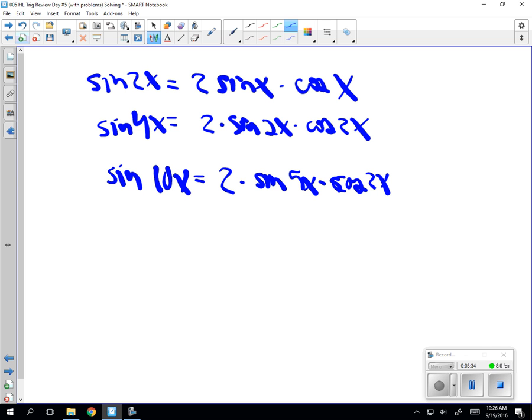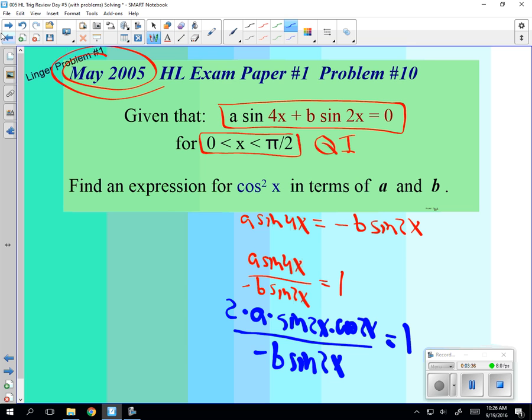Sin x cos x, yeah. All right, so going back here, why was that a helpful thing? Why was it helpful changing this sin 4x into 2 sin 2x cos 2x? So why was that helpful?